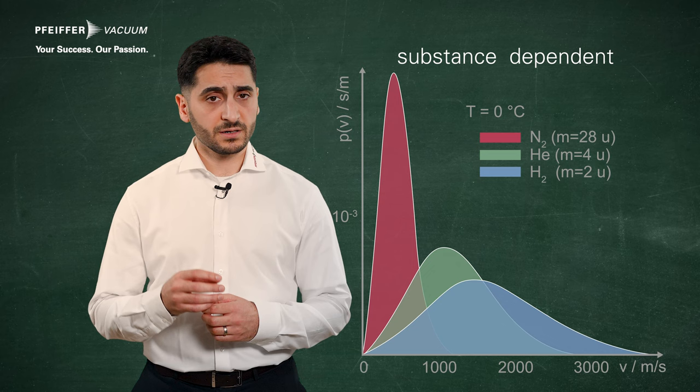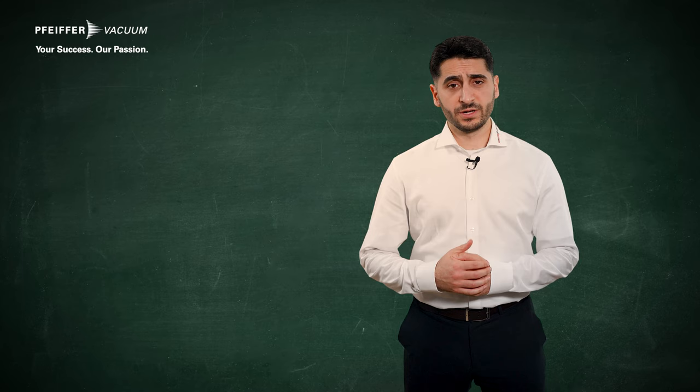At the highest point of the curve we have the maximum and therefore we have the most probable velocity of particles here, because at this point most of the particles have this velocity.